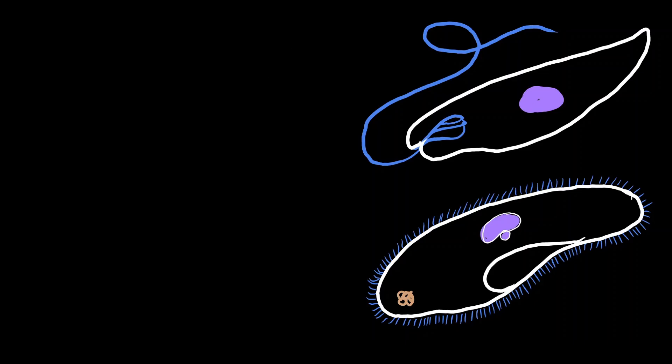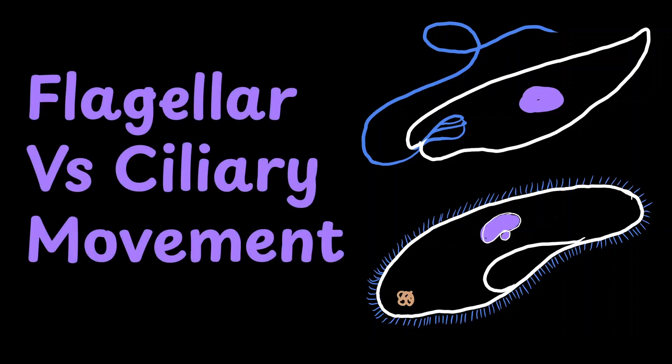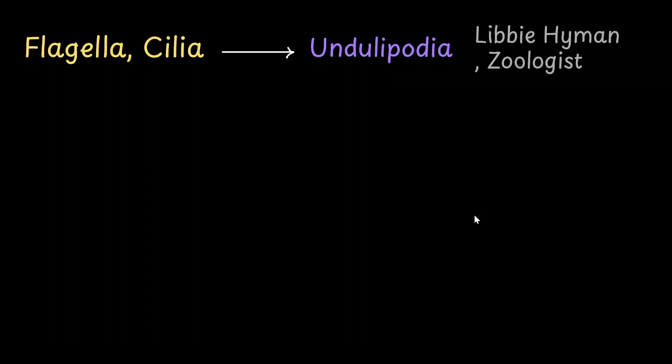In this video, we will not only be learning about the flagella and ciliary movement, but also compare and contrast between them. The eukaryotic cilia and flagella are called by the term undulipodia. This is to mainly differentiate them from their prokaryotic counterparts. The term was used by the American invertebrate zoologist Libby Heim. These structures help the organism to move in water as well as in body fluids.